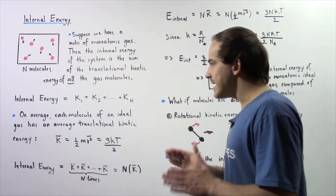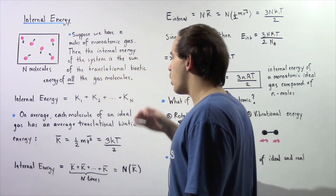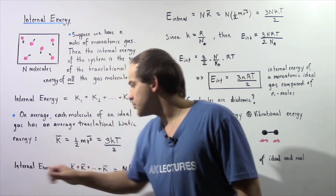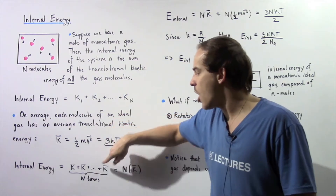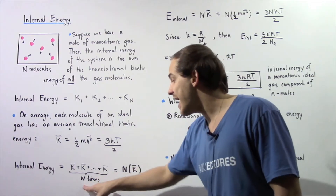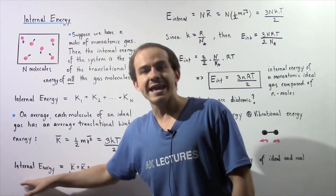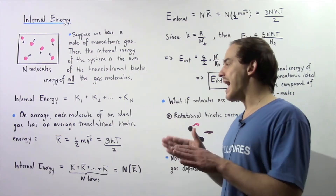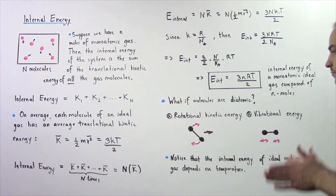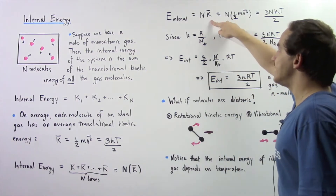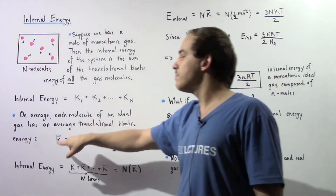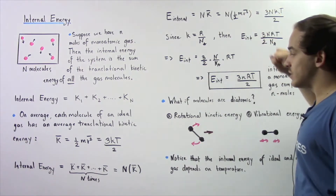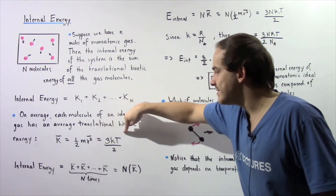That means we can replace each one of these terms — K1, K2, K3, all the way up to KN — with simply the average translational kinetic energy K̄. So the internal energy is equal to K̄ + K̄ + ... + K̄, where we have N of these K̄ terms because we have N number of molecules. That means the internal energy of our system is equal to N multiplied by K̄, which is equivalent to N times ½m times the average square velocity, or equivalently N times (3/2)kT.